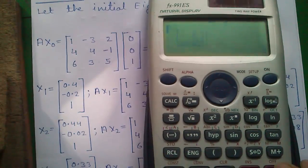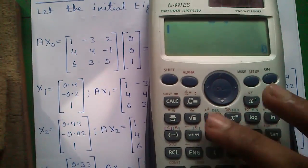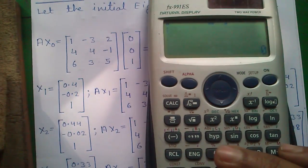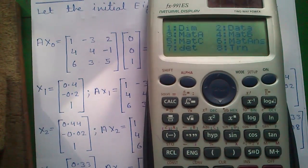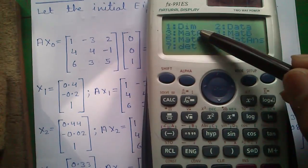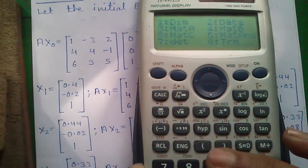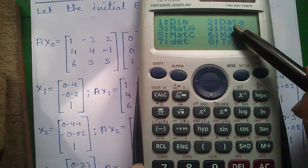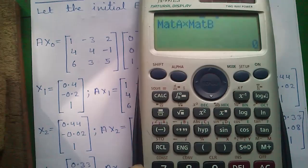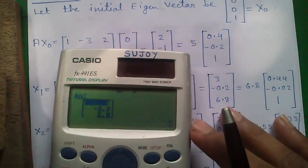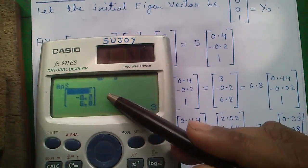Now we will multiply matrix A by matrix B. Press shift and 4, press 3 for matrix A, press the multiply button, again shift and 4 for matrix, 4 for matrix B, and press the equals button. A into x1 equals 3, -0.2, and 6.8.